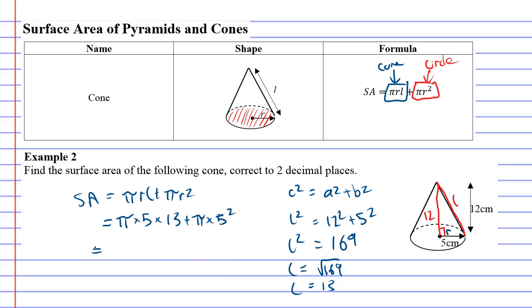All we're going to do is plug it into a calculator. Let me calculate it out: π × 5 × 13 + π × 5². They want it to two decimal places, so we have 282.74 centimeters squared.